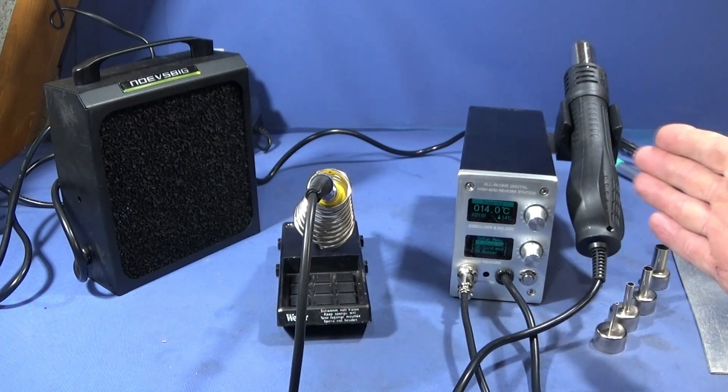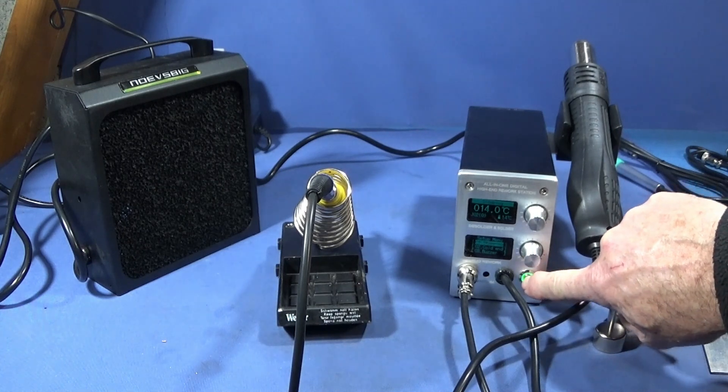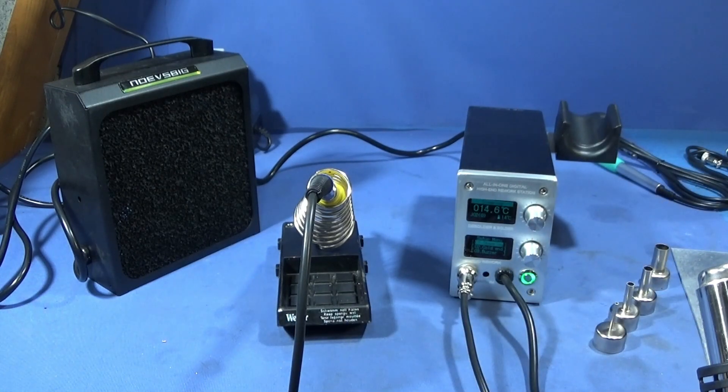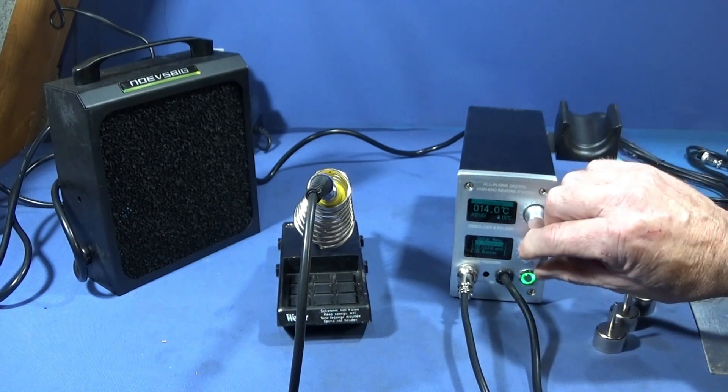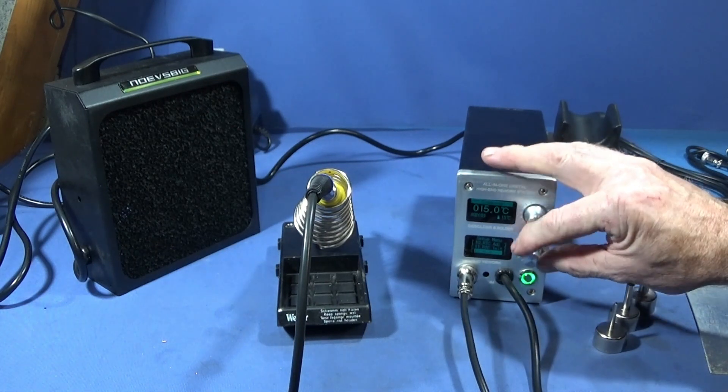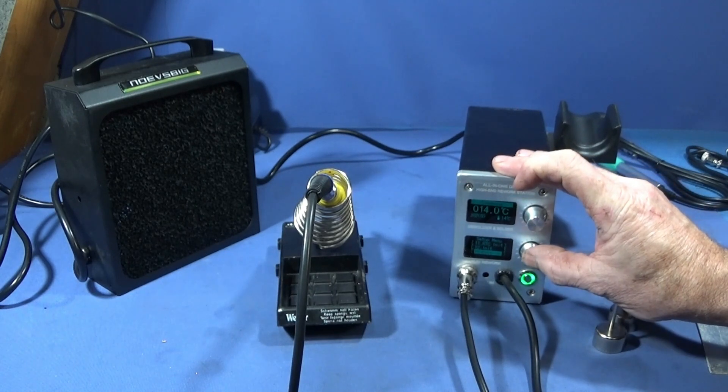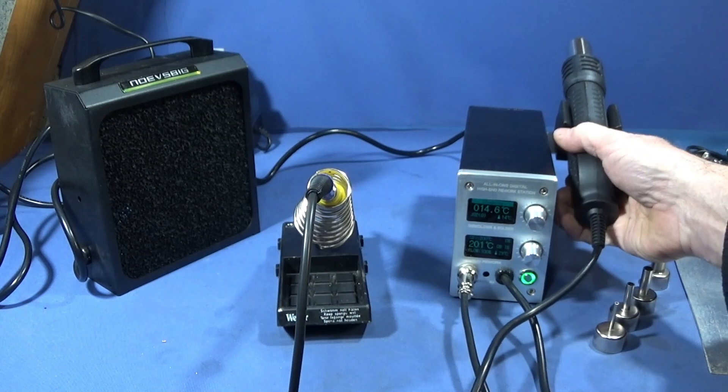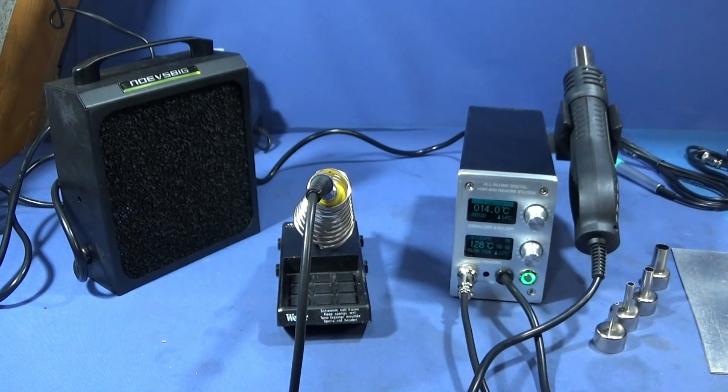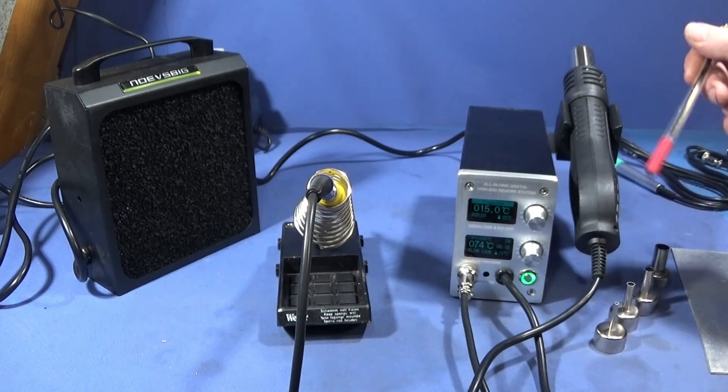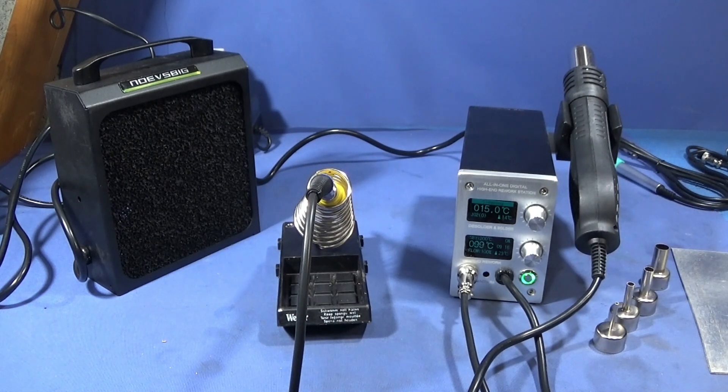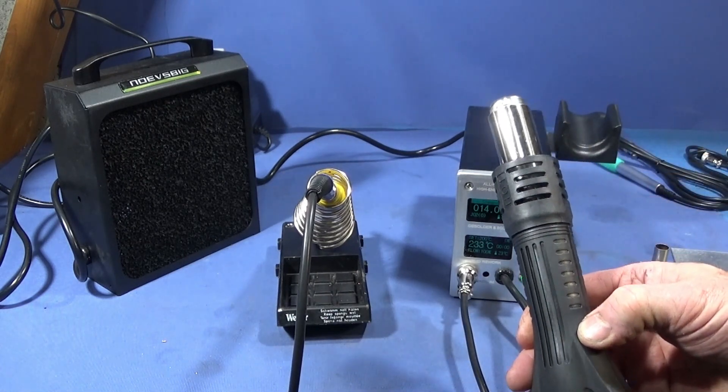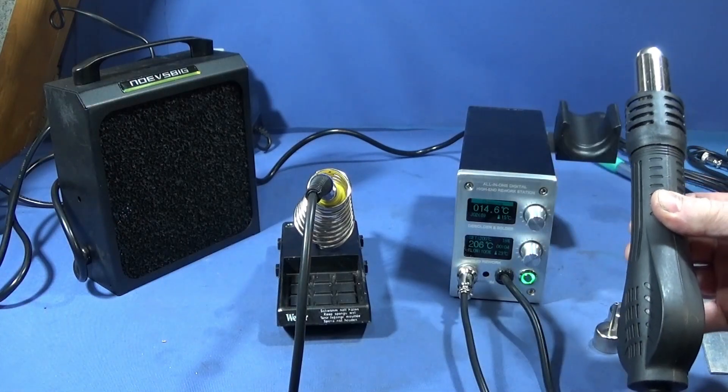It's fully automatic so when I use the heat gun and take it out of the unit, it comes on. I've set mine at around 200 degrees centigrade. As soon as I put it back into the holder, it recognizes that and takes the temperature down. Before it goes into standby mode it keeps running so that it cools down first with the flow of air, then stops at a certain temperature.